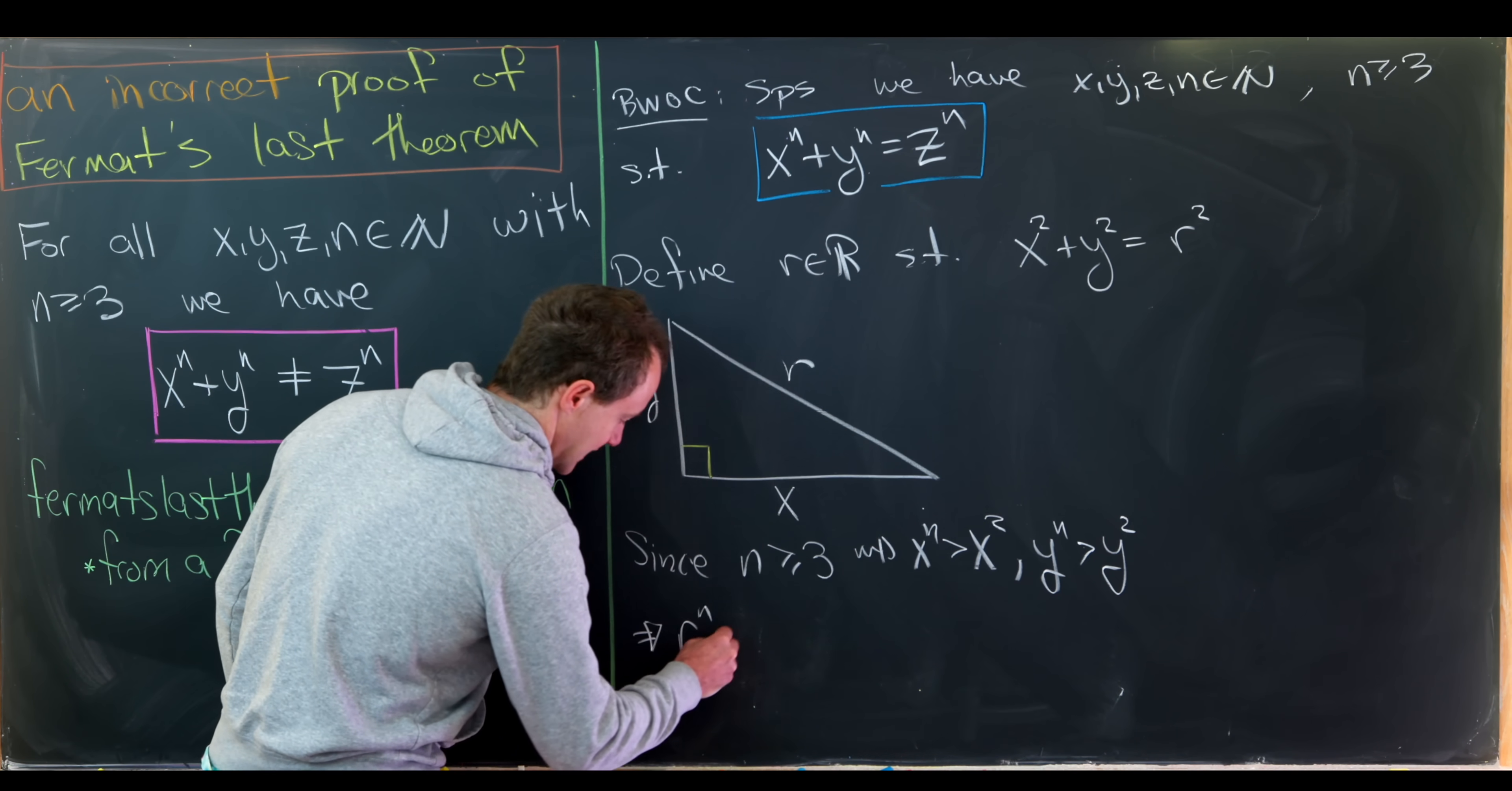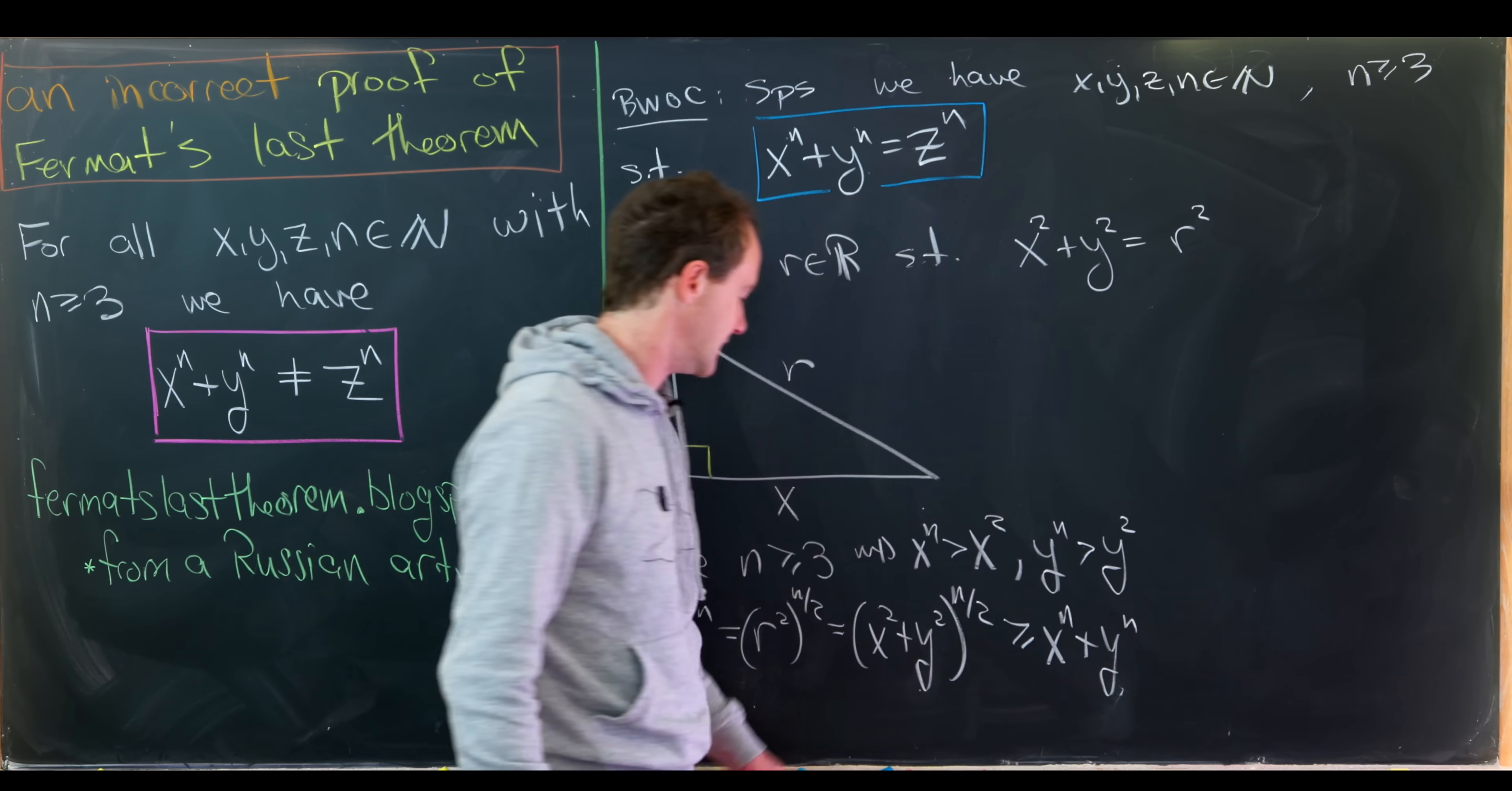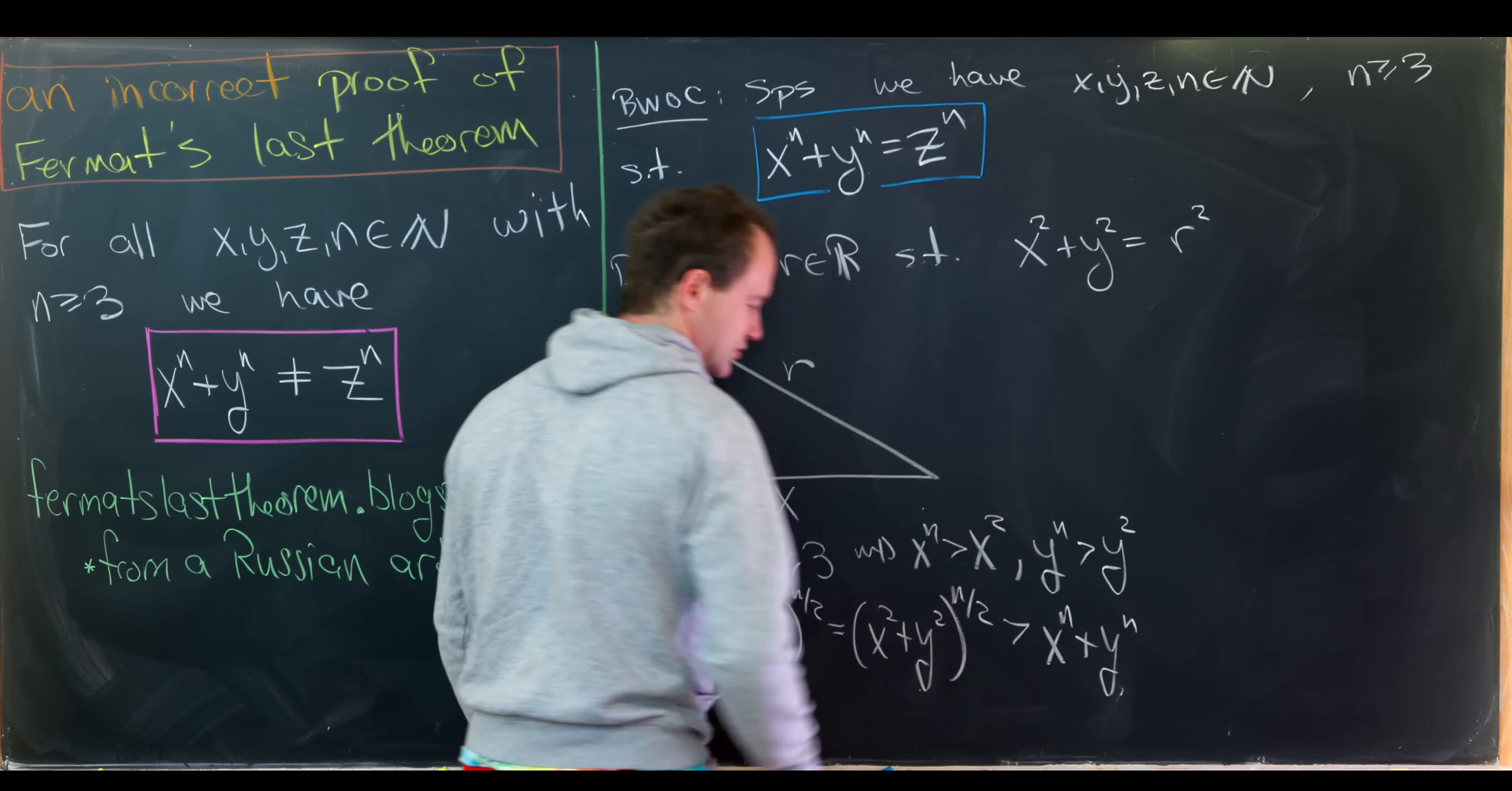But now let's see where that takes us. So that means we have r to the n, which is r squared to the power n over 2, can be written as x squared plus y squared all to the power n over 2. But now this object is going to be bigger than or equal to x to the n plus y to the n. Because if you were to expand this binomial, you would most definitely get an x to the n and a y to the n term, but you would get a lot of other terms too. And all of those other terms are bigger than zero. So when we remove all of those terms, we get this inequality. And here I might as well make this like some sort of strict inequality.